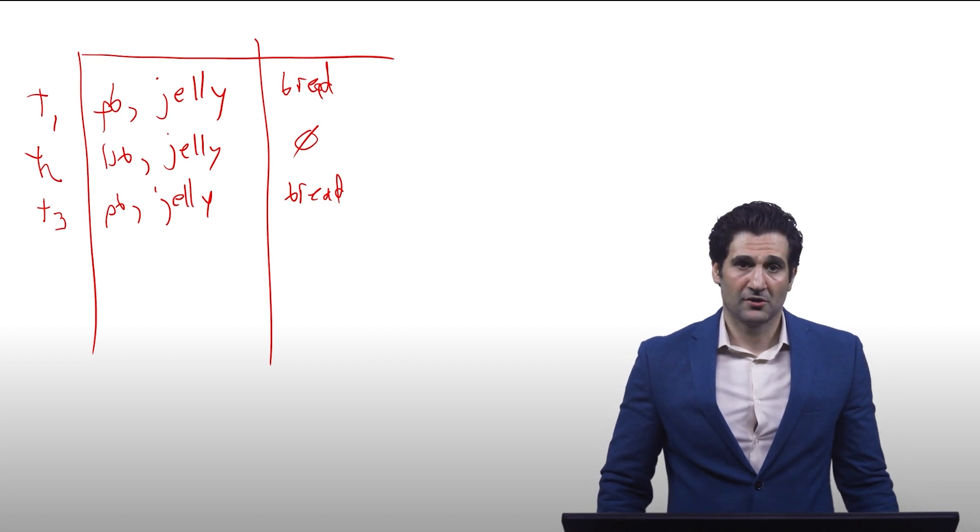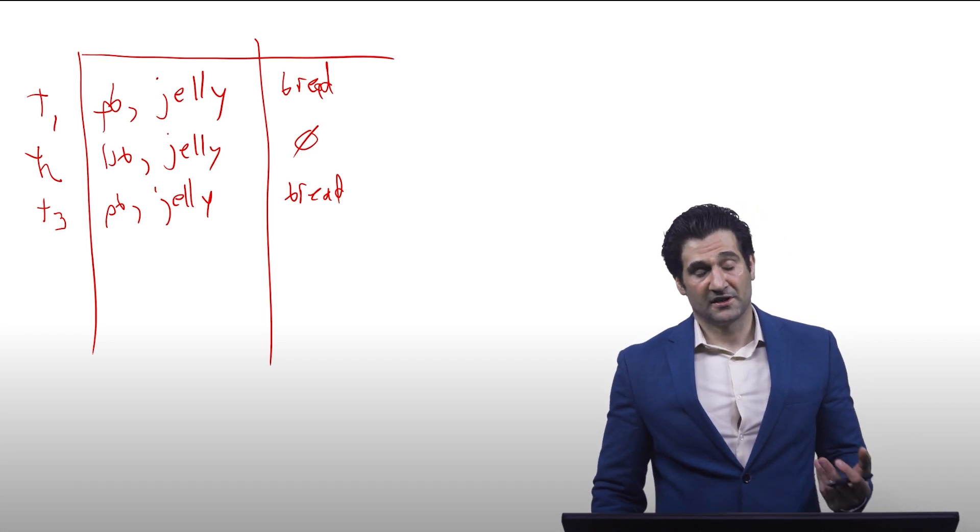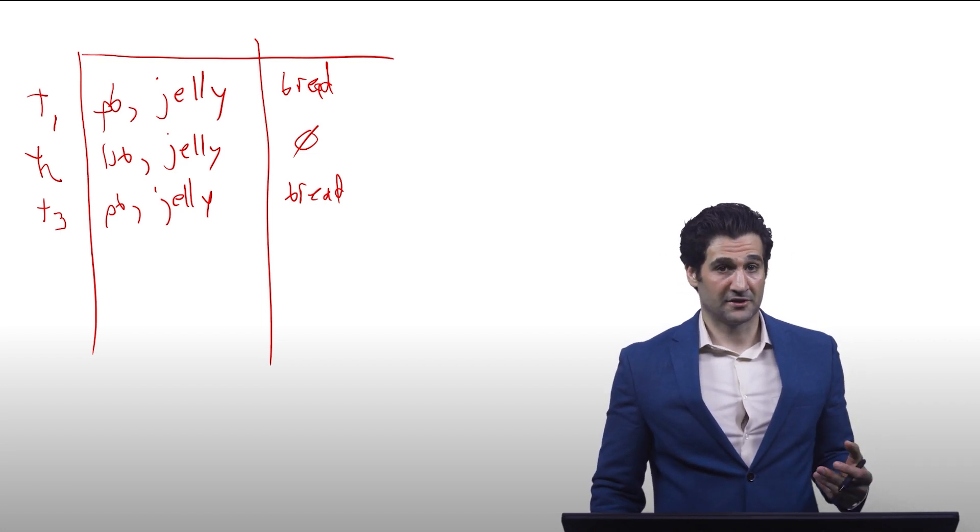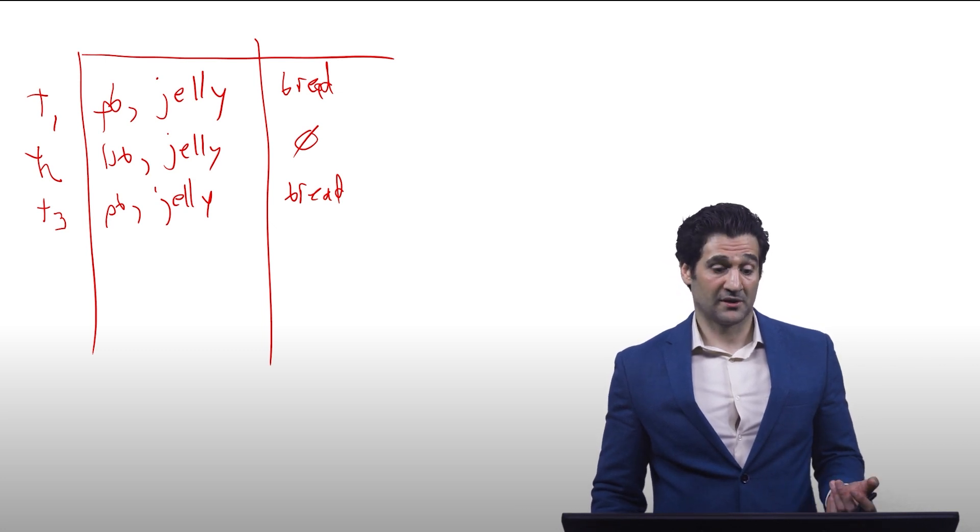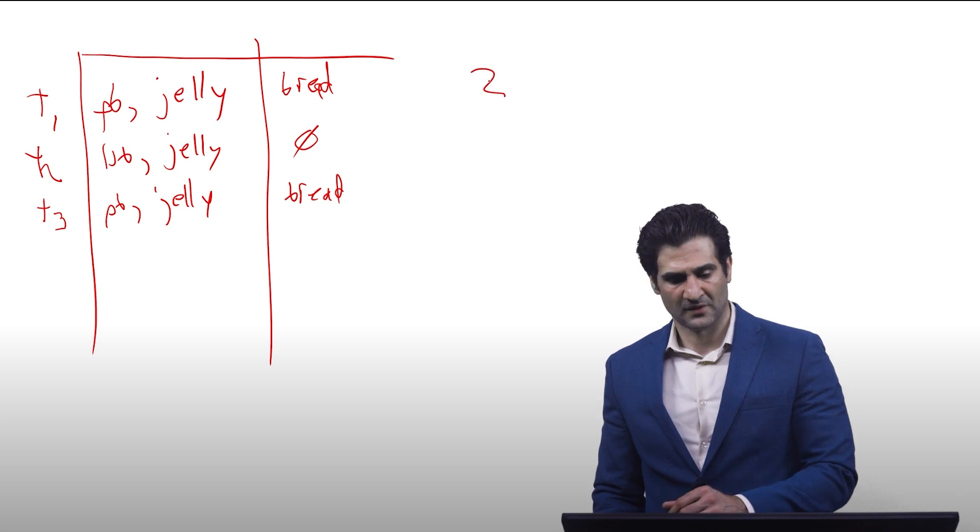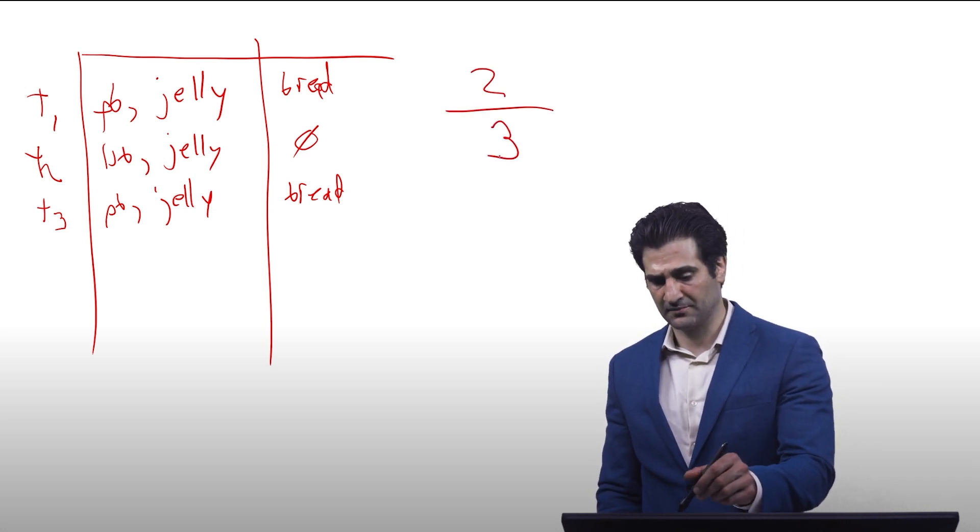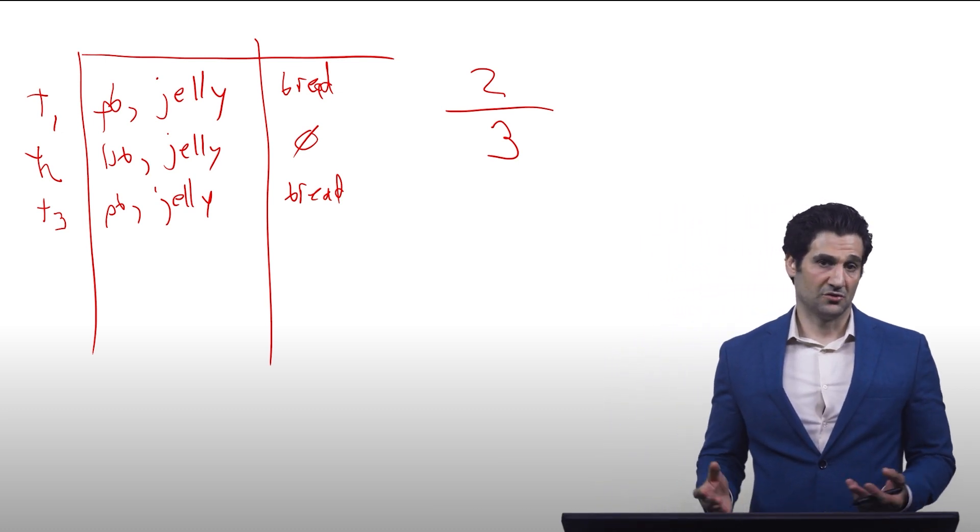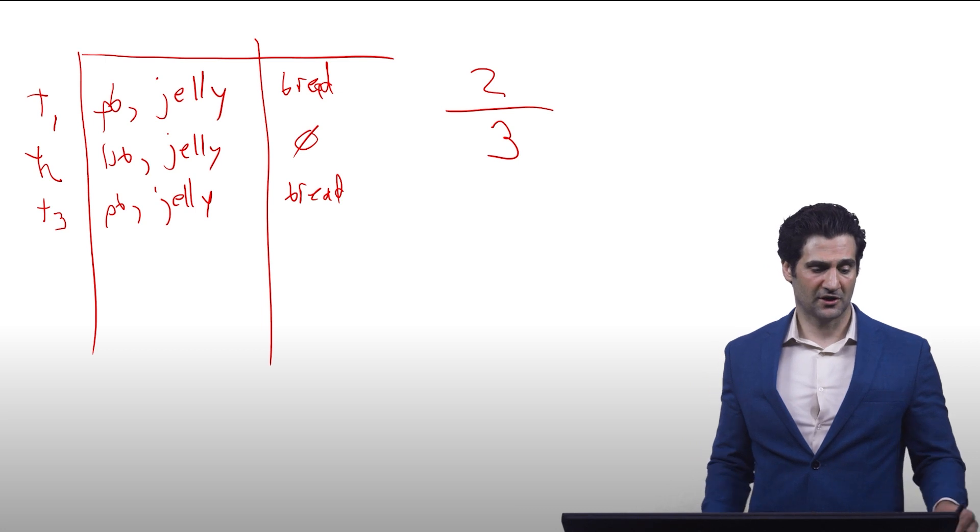So now all you've got is you know that peanut butter and jelly, that's itself a frequent item set. What we do is we count up the number of times that it occurs with bread, which is 2, divided by the support of peanut butter and jelly, which is 3. And this gives you our confidence. So it's very simple to compute. Not much different than what we talked about before.